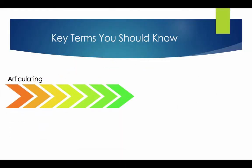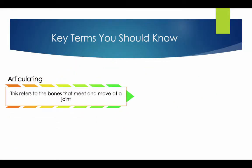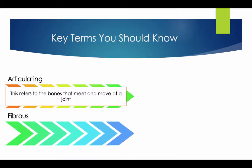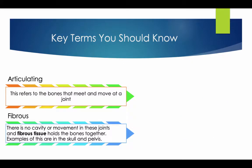Key terms you should know. Articulating refers to the bones that meet and move at a joint. The fibrous joint: there is no cavity or movement in these joints, and fibrous tissue holds the bones together. An example of this is the skull and the pelvis.